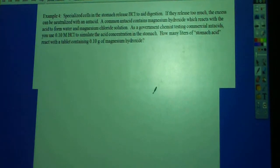Specialized cells in the stomach release hydrochloric acid to aid digestion. If they release too much, the excess can be neutralized with an antacid. A common antacid contains magnesium hydroxide, which reacts with the acid to form water and magnesium chloride solution. As a government chemist testing commercial antacids, you use 0.10 M HCl to simulate the acid concentration in the stomach. How many liters of stomach acid react with a tablet containing 0.10 g of magnesium hydroxide?